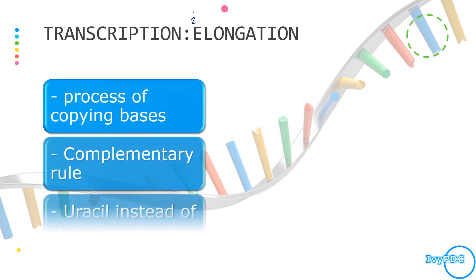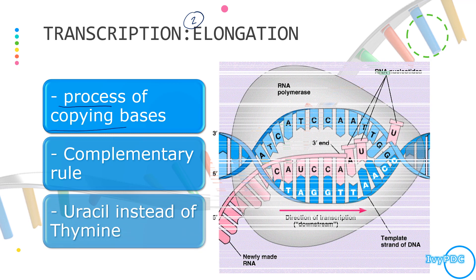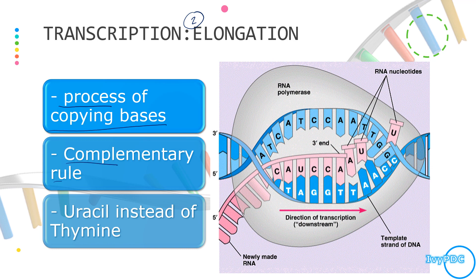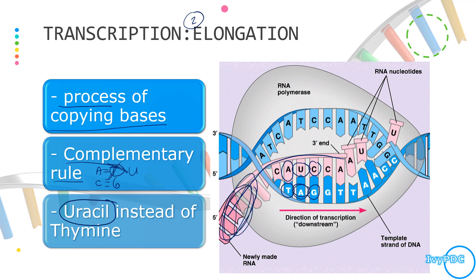The second step is elongation, which is the actual process of copying the different bases using the complementary rule: A pairs with T and C pairs with G. If thymine is seen on the DNA, adenine is added to the RNA. If guanine is seen, cytosine is attached. Since we are creating an RNA and thymine does not appear in RNA, uracil is used instead — so if adenine is found on the DNA template, uracil is attached to the RNA strand. The newly made RNA will contain uracil rather than thymine.